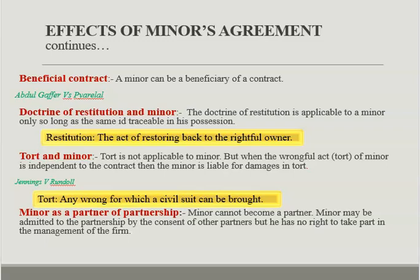The next point is the Doctrine of Restitution and Minor. Restitution is the act of restoring back to the rightful owner that which has been taken away or lost. When a property is obtained by a person by false representation, he can be compelled to restore it to the person from whom he received it.